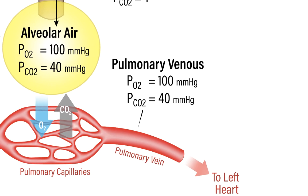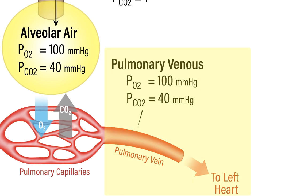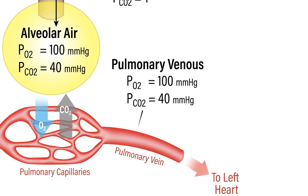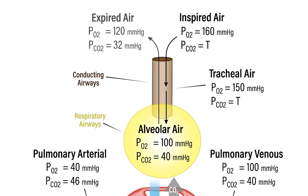Remember, the pulmonary venous blood returning to the left heart is what will eventually become the systemic arterial blood, making its way out to the tissues around the body. To quickly complete this story, upon expiration, the gas composition of the expired air has a PO2 of 120 millimeters of mercury and a PCO2 of 32 millimeters of mercury.